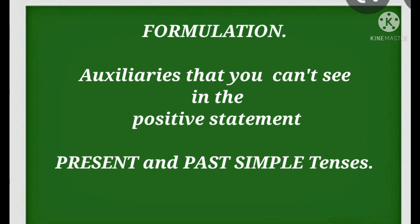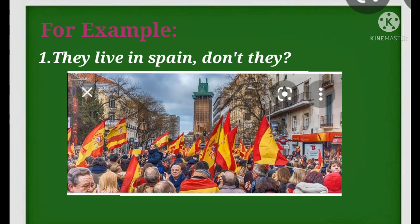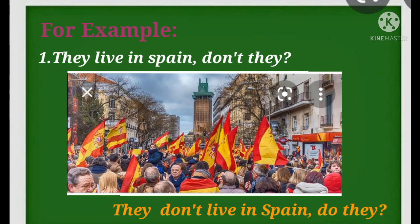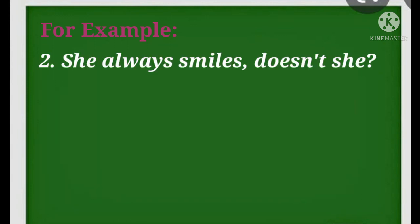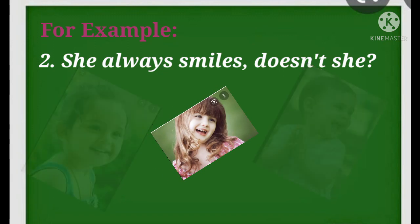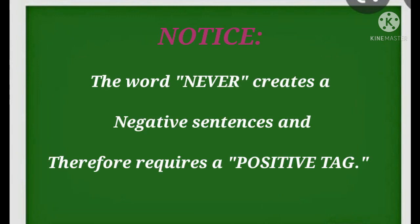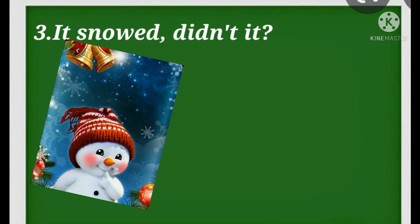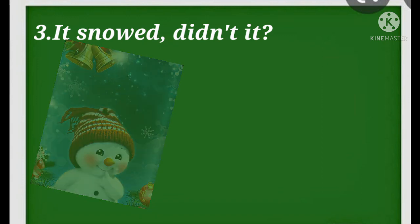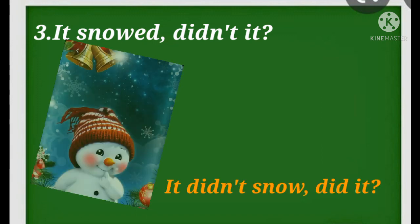Now listen, in statements where you cannot see the auxiliaries in the positive statement, this includes sentences in the present and past simple tenses. For example: they live in Spain, don't they? They don't live in Spain, do they? She always smiles, doesn't she? She never smiles, does she? Notice that the word never creates a negative sentence and therefore requires a positive tag. It snowed, didn't it? It didn't snow, did it?